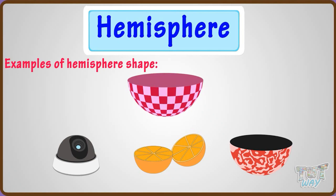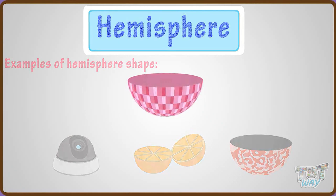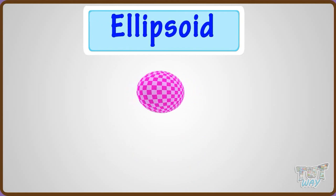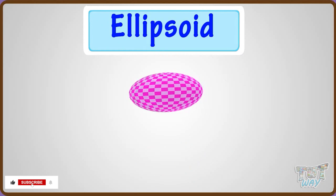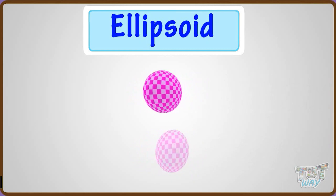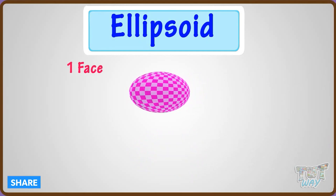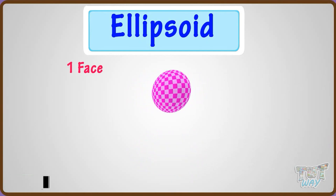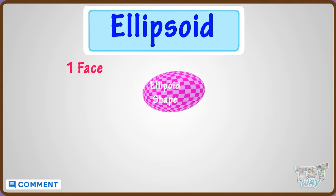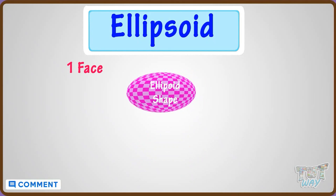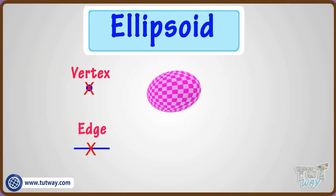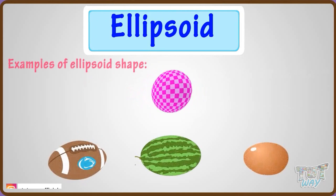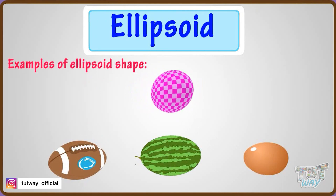Now let's learn another interesting shape — Ellipsoid. An ellipsoid is a 3D shape resembling a flattened sphere. It has only one face which is its surface, which is ellipsoid in shape, and it has no vertex and edge. These are a few objects which are ellipsoid in shape.